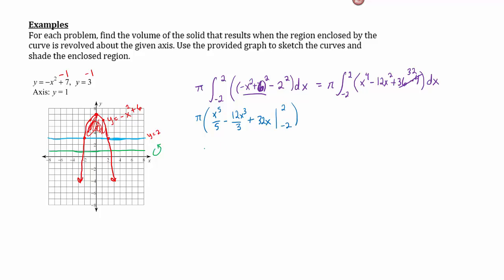So we'll get x to the fifth over five minus 12 x cubed over three plus 32 x. We're plugging in two and negative two. And this can simplify to be four if you want to save yourself a little bit of effort there. So we've got two to the fifth over five minus four times two cubed plus 32 times two minus, and we do the same thing again but with negative two. This is 32 fifths minus 32 plus 64. And then this is going to be the exact opposite: negative 32 fifths plus 32 minus 64.